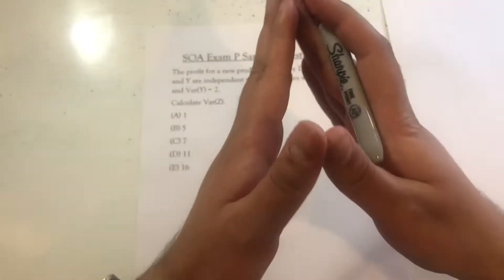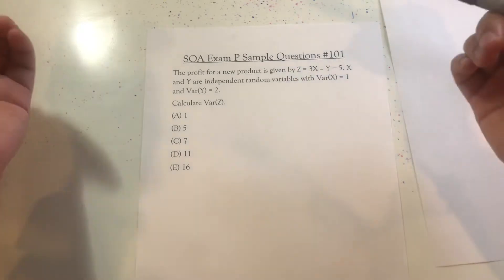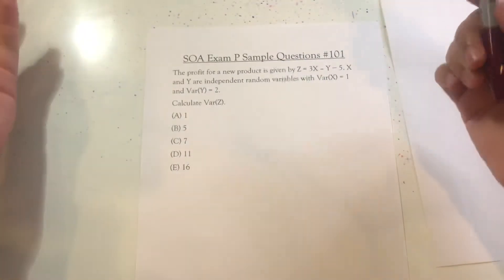Okay, I like it. Nice, straightforward problem, not a lot of words, and quite easy. So we need to calculate the variance of Z,